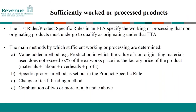For sufficiently worked or processed products, the main methods considered are value-added — where the value of non-originating material does not exceed a certain percentage of the ex-works price, which is the combined cost of material, labour, overheads, and profit. The percentage will be set out in the product-specific rule of the relevant FTA. Specific processes may also be set out in the product-specific rule, with different rules even for the same product depending on the specific free trade agreement. A change of tariff heading means processing that changes the commodity code of the product from one heading to another — for example, rawhide factored into shoes will change the CN code. You can also use a combination of value-added, specific process, and change of tariff heading methods.